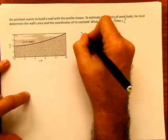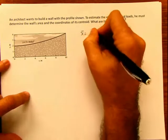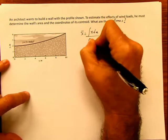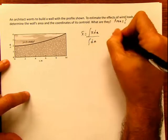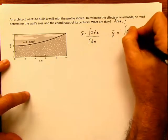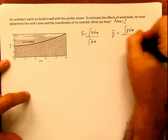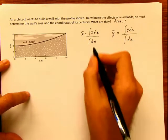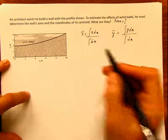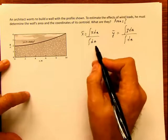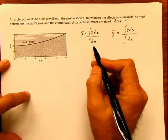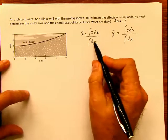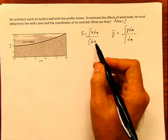So the first step is the same. You start with x̄ equals the integral of x·dA divided by the integral of dA, and your ȳ is equal to the integral of y·dA divided by the integral of dA. It's easier to solve the integrals independently. So let's start with solving the integral of dA.